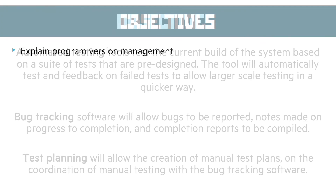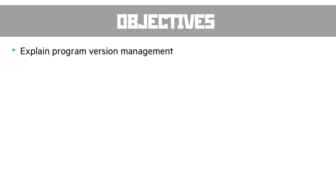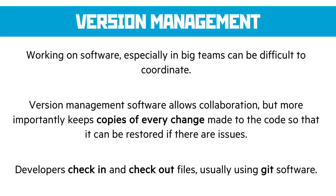The final objective in this unit is to explain program version management. Unless you're doing this properly, you end up sending files back and forth labelled version one, version two, final, final final — you've done this yourself in a team. Version management allows us to work in a big team, coordinate, and keep copies of every change we've made. That's really important because if we accidentally delete or break something, we can just move back through the versions.